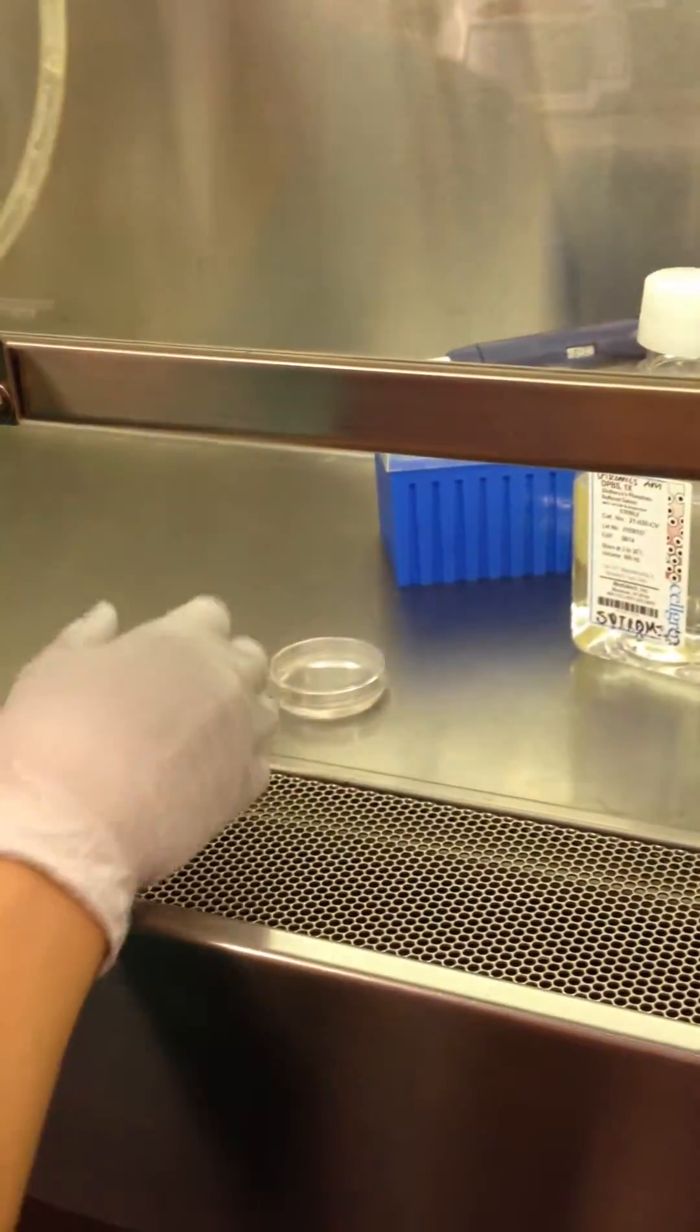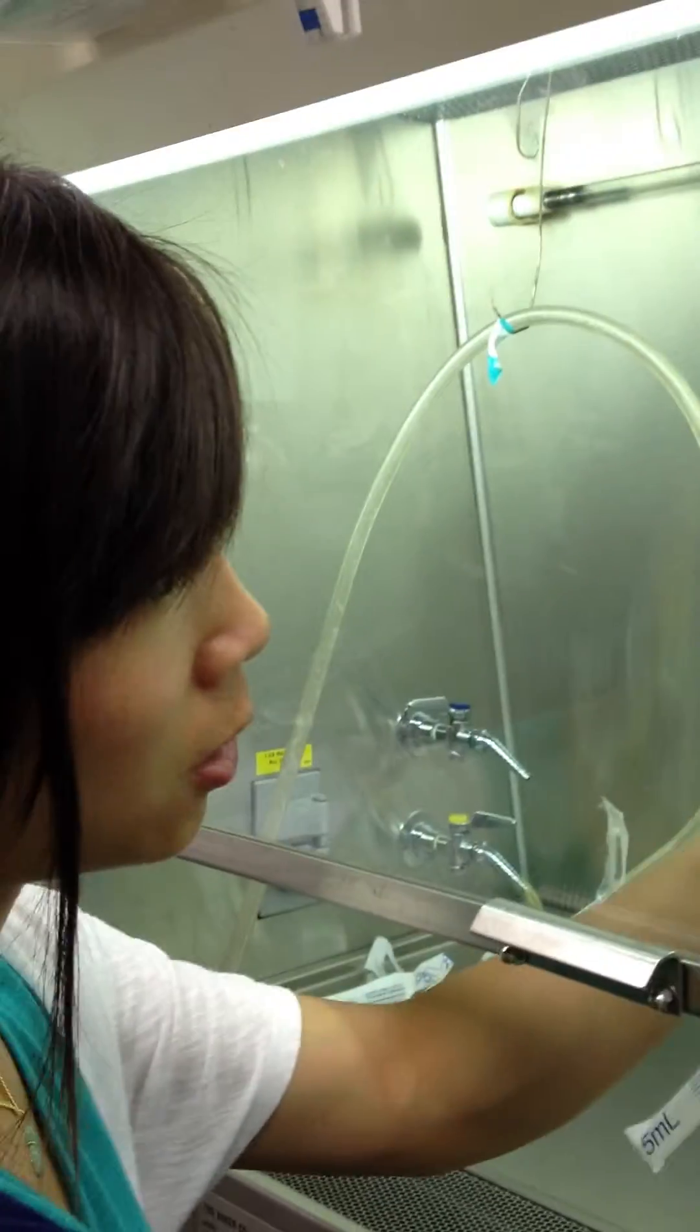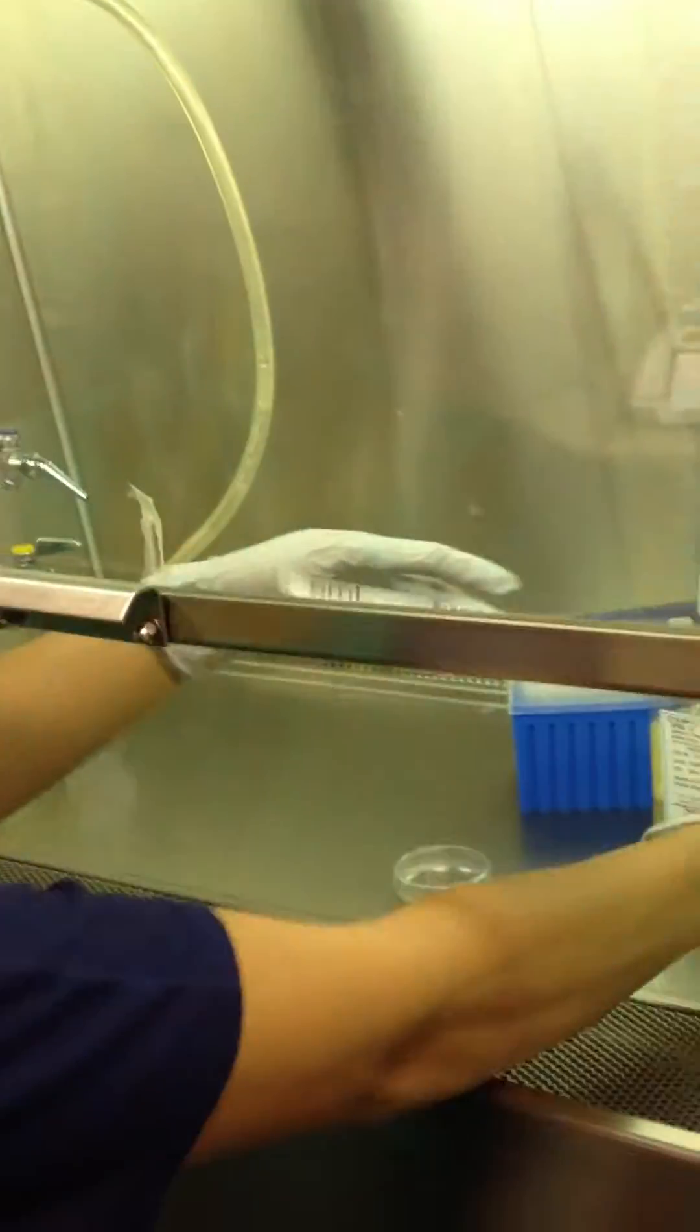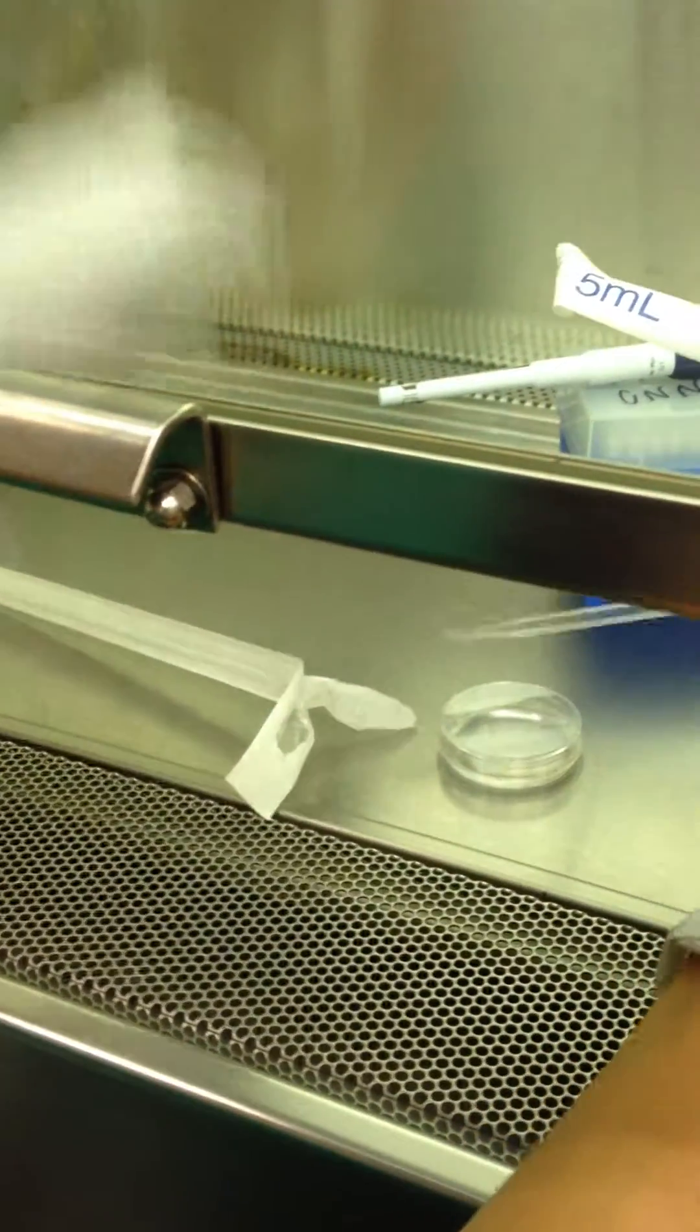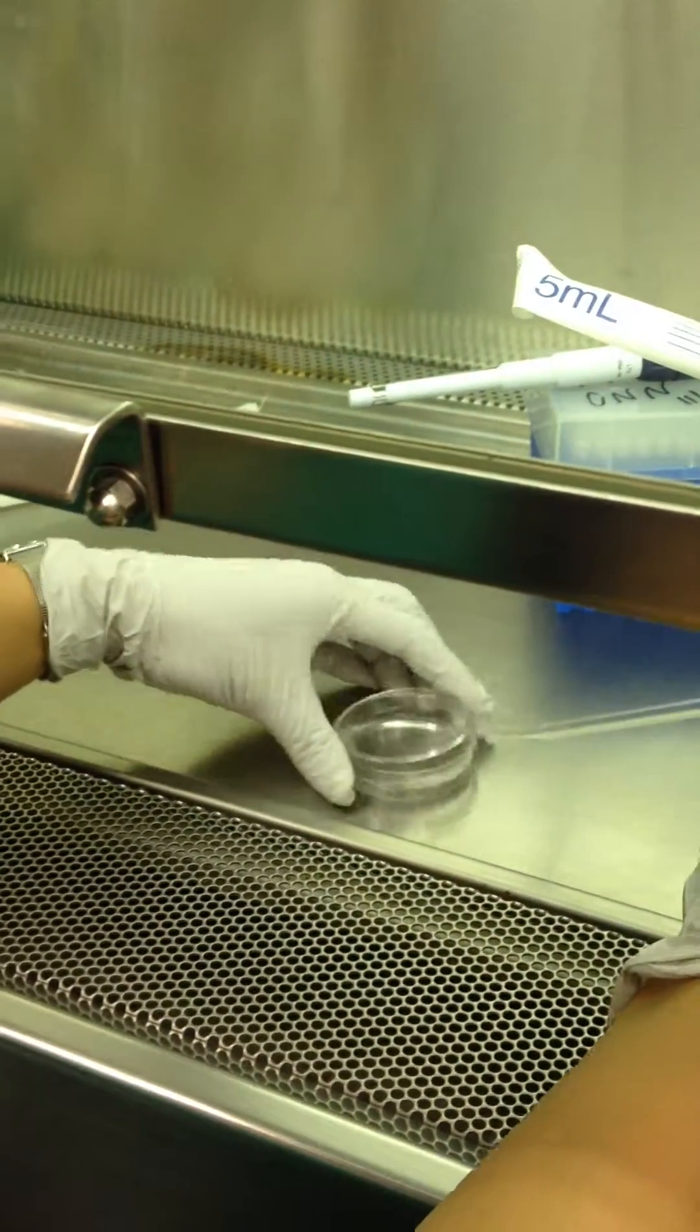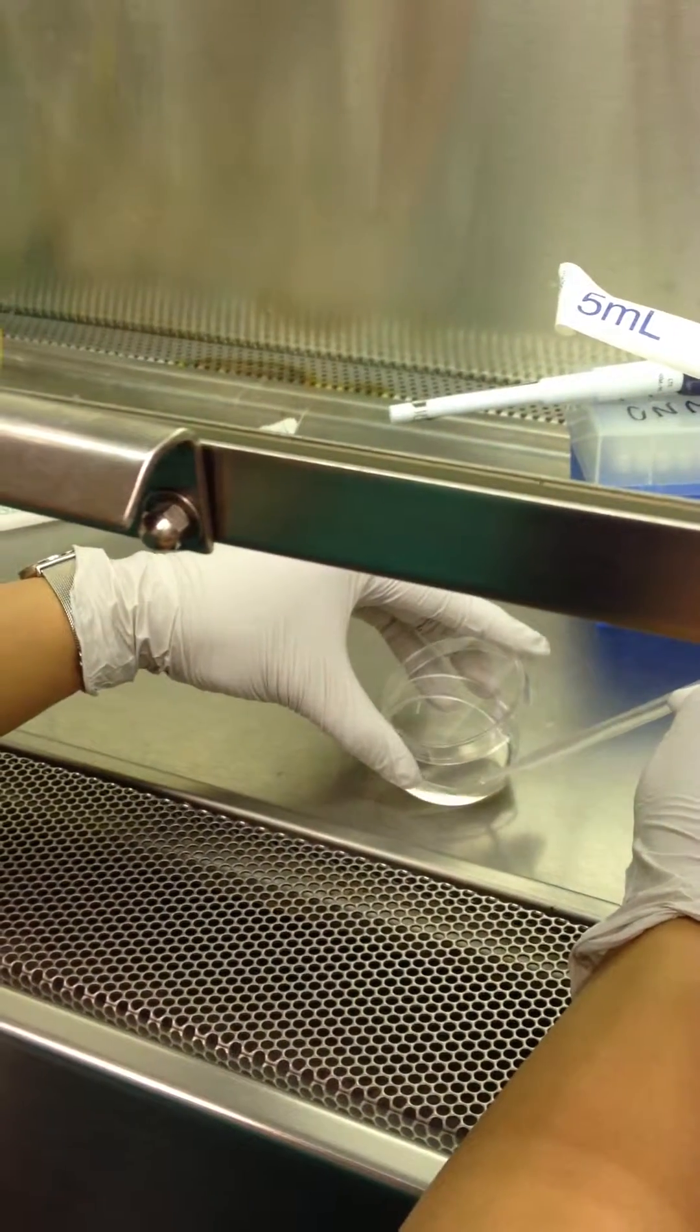So I'm going to repeat that again. I'm going to tilt it, aspirate, add 5 more mils of the PBS. Again, work really quickly. You don't want the cells to die or to dry up. So again, that's opening it up as little as possible. And just tilting it out.